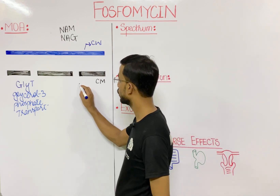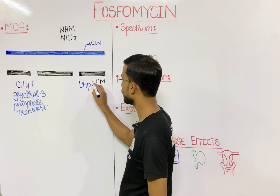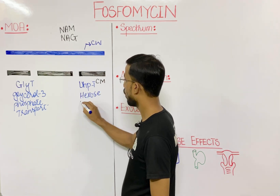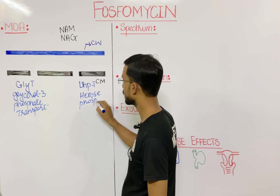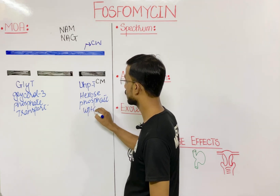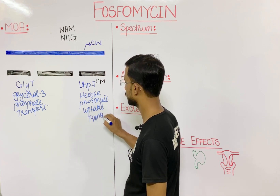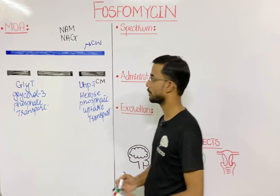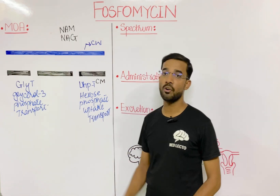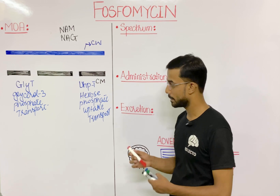Another channel is UhpT — the hexose phosphate uptake transport system. So these are the two channels through which fosfomycin will enter into the bacteria.